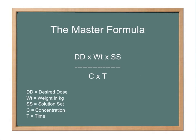Here's how the master formula goes. It's desired dose times the patient's weight in kilograms times the solution set over concentration times time, and that's time in minutes. So write that down somewhere so you remember it and you can keep it handy. It's desired dose times the patient's weight times the solution set over concentration times time.